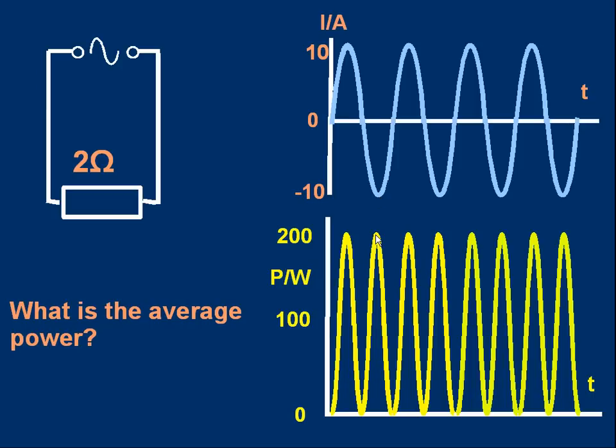And of course when the current is zero the power will be zero, and we get this curve. Now it looks like a sine curve — and in fact it is a sine curve that's been shifted, so it's not going between positive and negative values, but the shape is that of a sine curve.